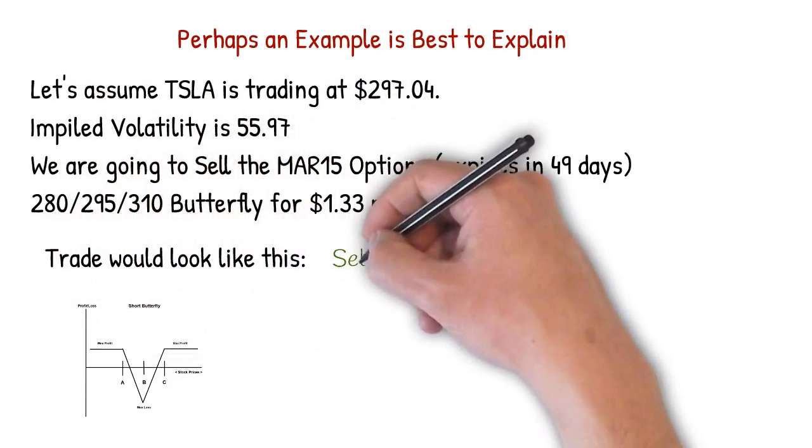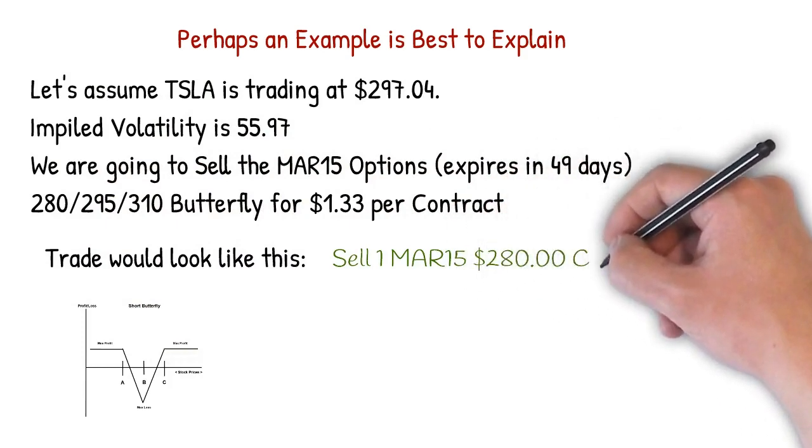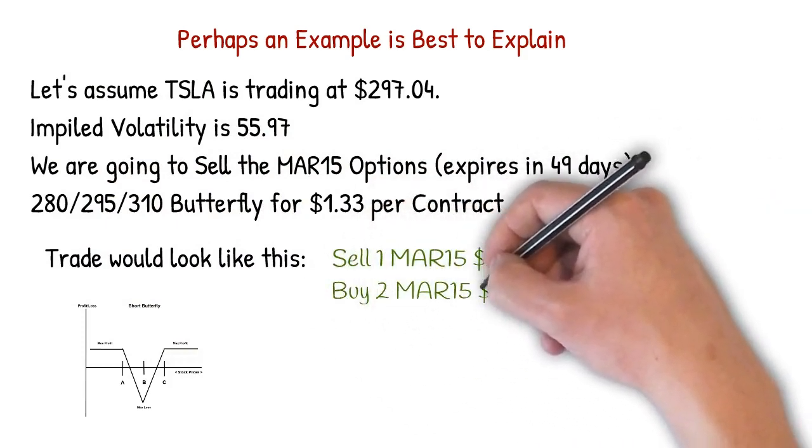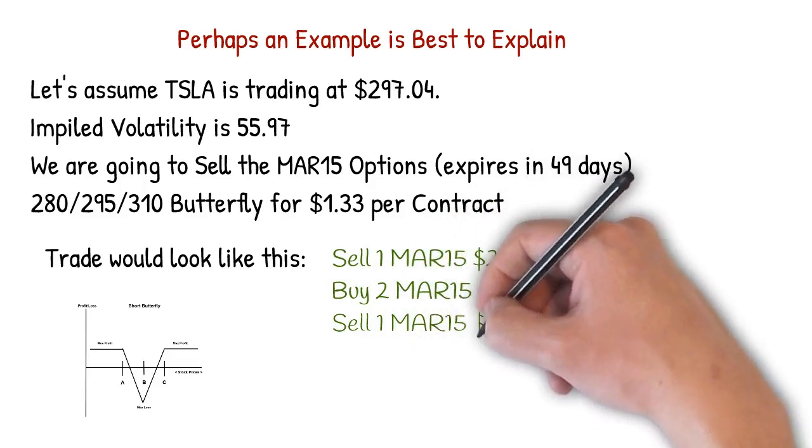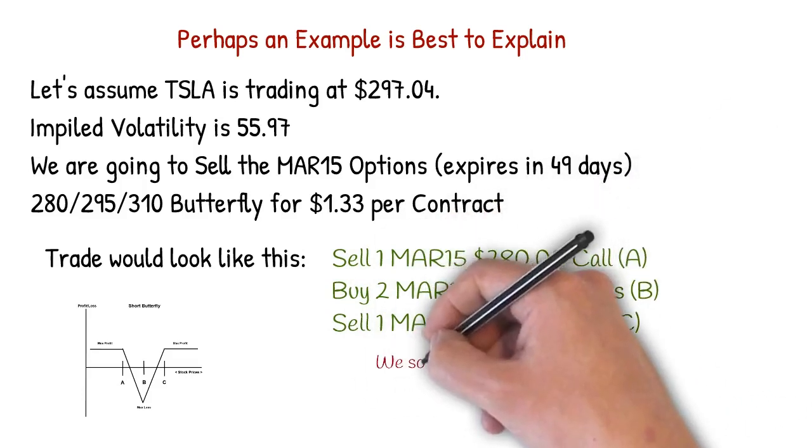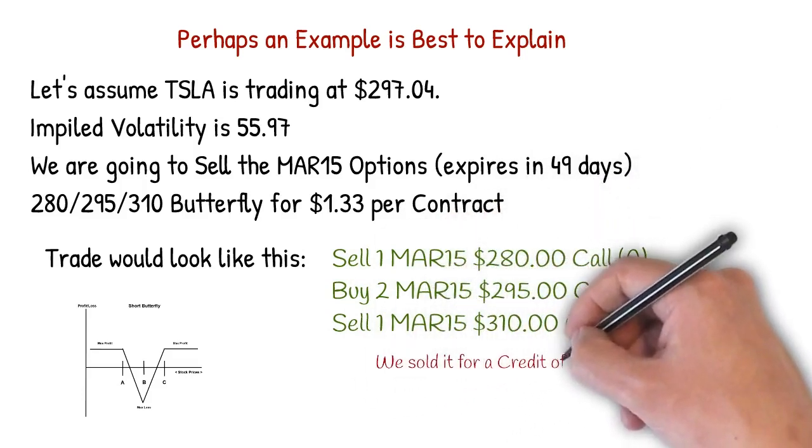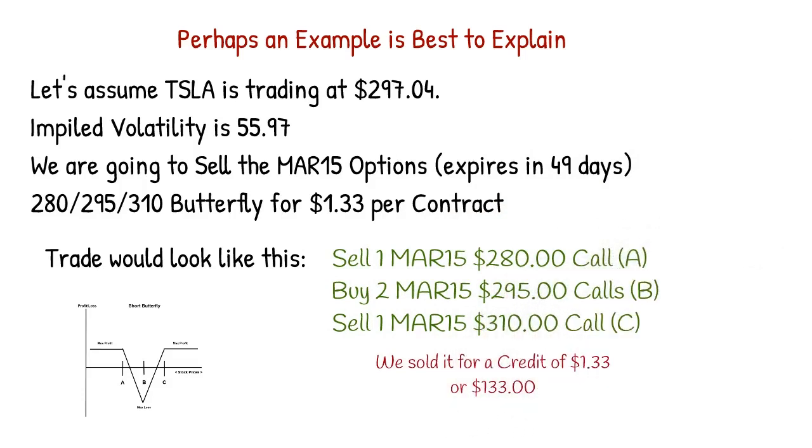We are going to sell one March 280 call, buy two March 295 calls, and sell one March 310 call for a credit of $1.33 or $133.